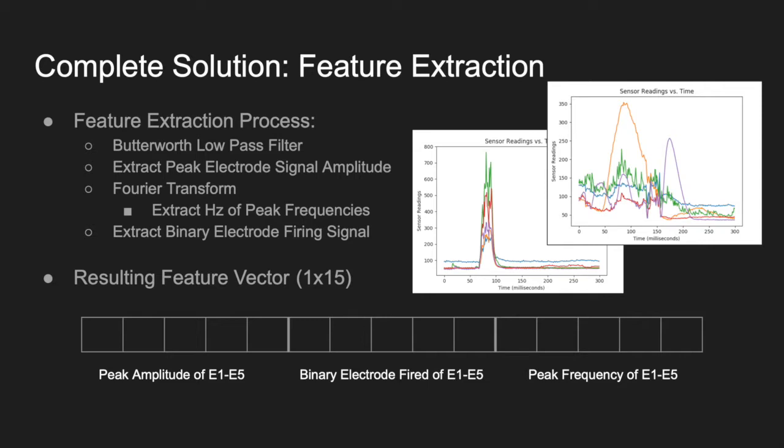The time series signal was then converted to the frequency domain using the Fourier transform. We extracted the hertz of the peak frequency for each electrode. Combining these various features together resulted in a 1 by 15 feature vector, which was used for classification.